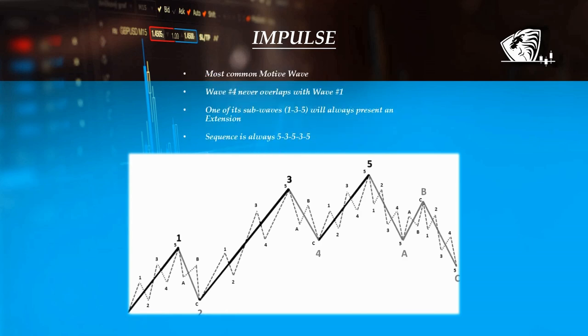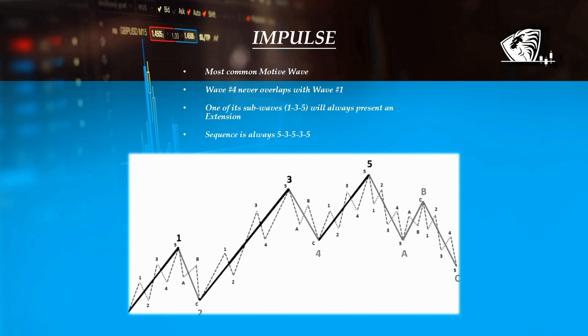An impulse is the most common motive wave in which wave 4 never overlaps with wave 1 or enters its territory. In an impulse, one of the motive subwaves 1, 3, or 5 would almost always present an extension and the sequence is always 5-3-5-3-5 without any exceptions. The rule mentioned earlier governs all motive waves and should never be disregarded in order to achieve greater practical utility, resulting in correct counting or labeling.